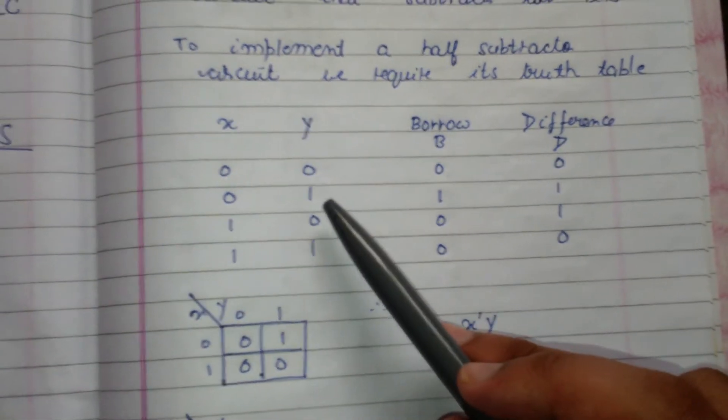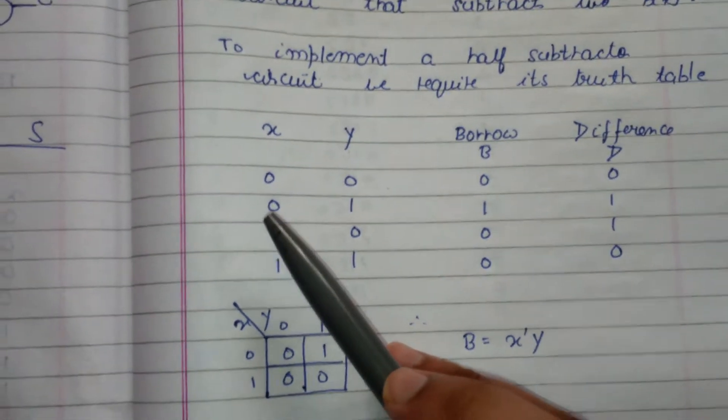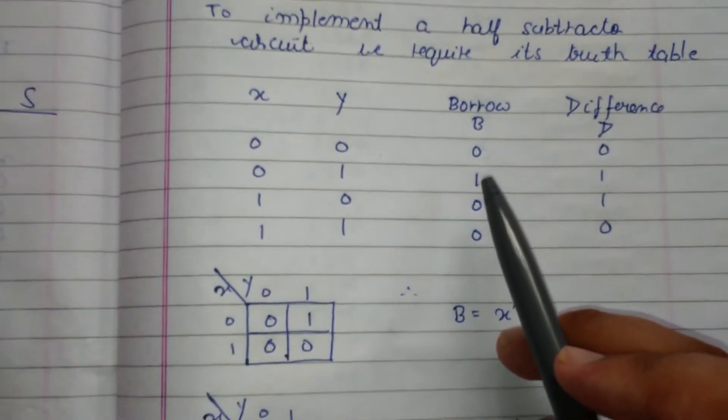Now for borrow, borrow is one only when we are going to subtract one and the bit that we're going to subtract from is zero. Then we have to make borrow one. So here borrow is one.